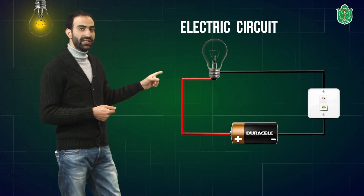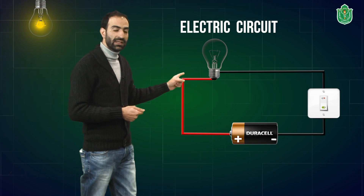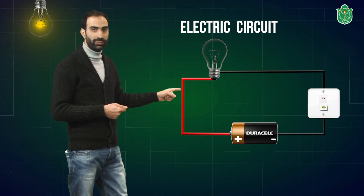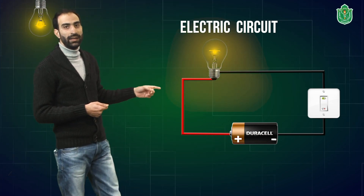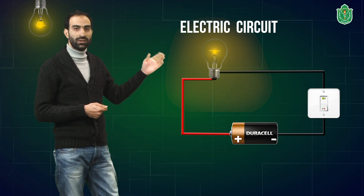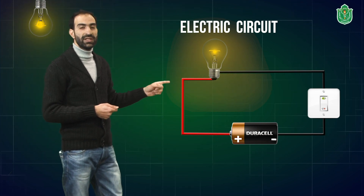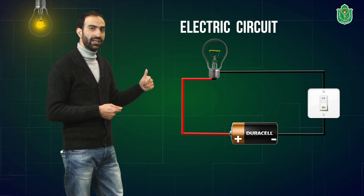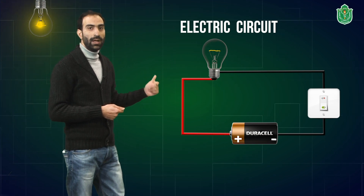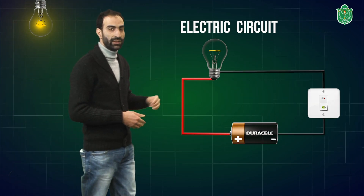When the switch is placed on, the circuit gets complete and the electricity runs throughout the circuit and the bulbs will glow. And when the switch is placed on the OFF position, the circuit is broken up and the electric current will not flow in the circuit.